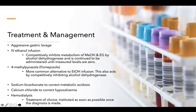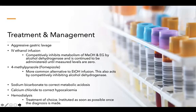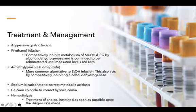Once the causative agent is determined, we move to the treatment plan and symptomatic management. Options include aggressive gastric lavage, IV ethanol infusion, or fomepizole — both ethanol and fomepizole competitively inhibit the metabolism of ethylene glycol by inhibiting alcohol dehydrogenase, though fomepizole is most commonly used. Sodium bicarbonate is used to treat metabolic acidosis, and calcium chloride addresses hypocalcemic tetany seen in the initial hours. However, hemodialysis is the treatment of choice and should be instituted as soon as possible once the diagnosis is confirmed.